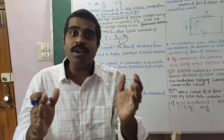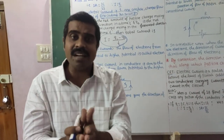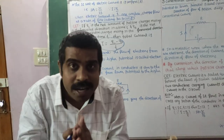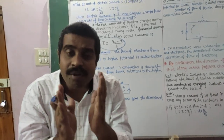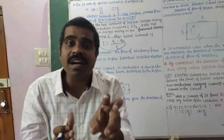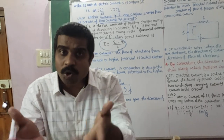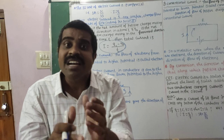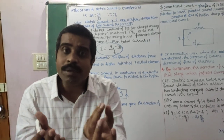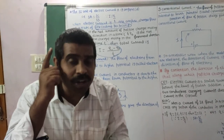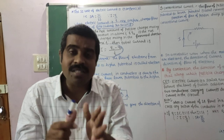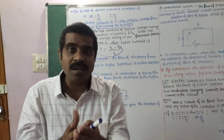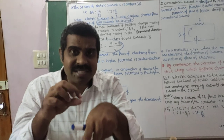Lightning during any season carries current in the order of thousands of amperes. Household appliances like refrigerators and mixers use current in terms of amperes. Electronic devices like LEDs and mobile charge carriers use current in terms of milliamps and microamps. Nerve signals consume current in the order of microamps.